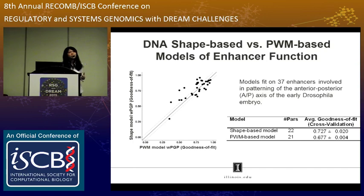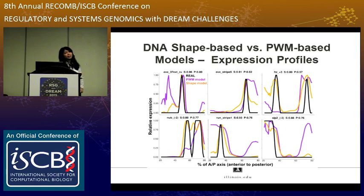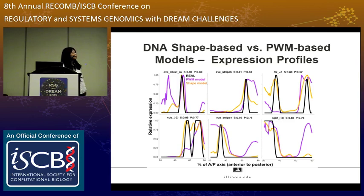To better appreciate the difference between the two models, I plotted gene expression profiles for all 37 enhancers and selected six to show. The blue lines are real data (ground truth), purple is the PWM model prediction, and yellow is the shape-based model prediction. Across these plots, some spurious peaks previously predicted by PWM are removed by the shape model, and the shape model also more accurately predicts expression boundaries.